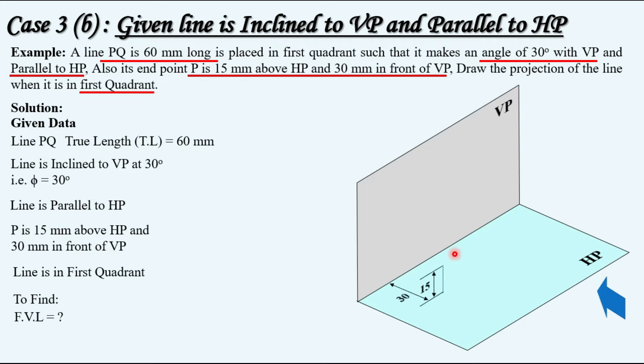So as per the given dimensions or distances, 30 mm in front of VP, 15 mm above, there is a point named P. And there is an angle with the vertical plane Phi that is given as 30 degrees in this question. With the true length mentioned, that is 60 mm, at the end of the true length you will get another point Q.